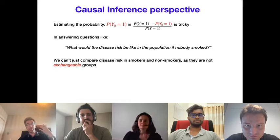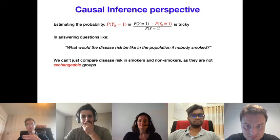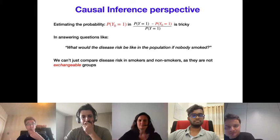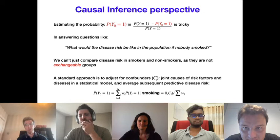A standard approach is to adjust for confounders — the joint causes of the risk factor and disease — and average the subsequent disease risk to estimate the probability of disease in a population where nobody smoked. However, for particular causal structures the joint attributable fraction is not so simple to compute by just adjusting for confounders from a single regression model.